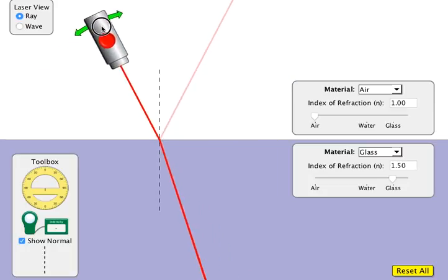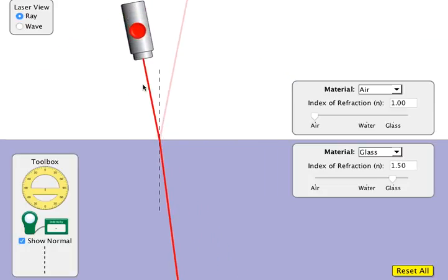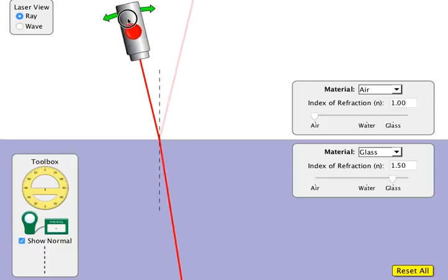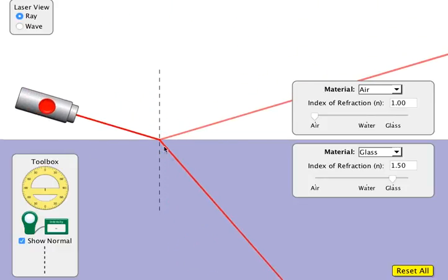Here you can see I have a very small angle of incidence - that's the angle by the way, it's always measured from the normal to the ray - then we have only a small deviation over here. But if I turn this quite sharp, then the amount of bending is actually quite strong.